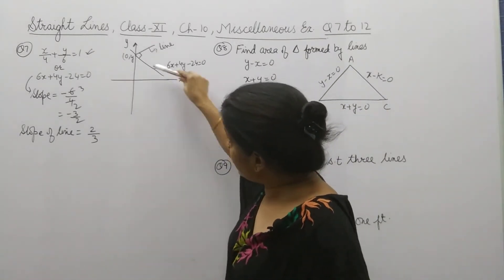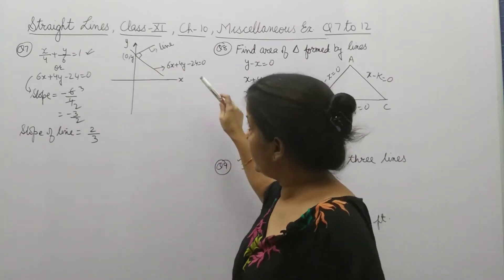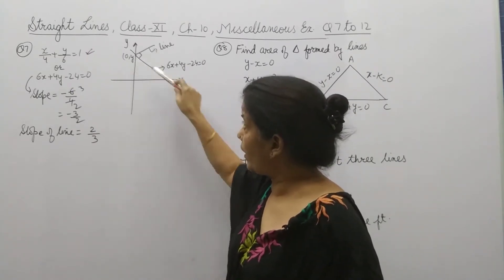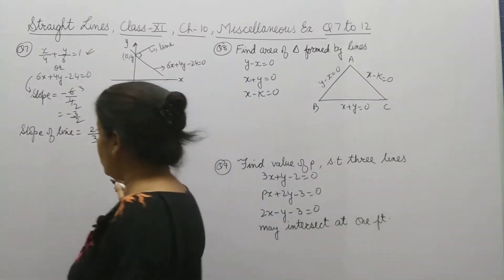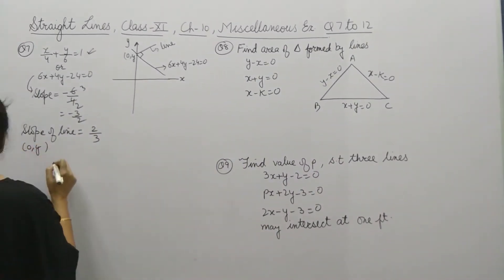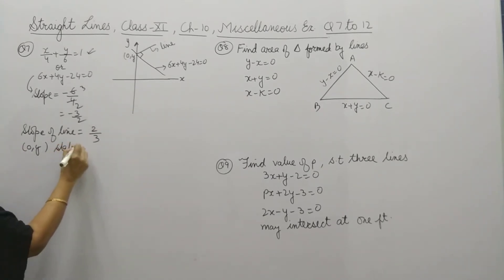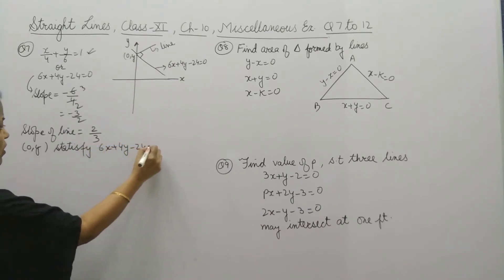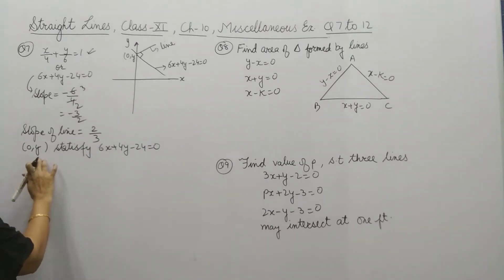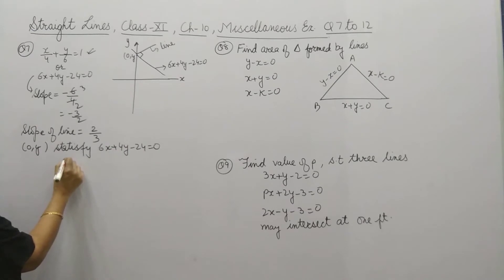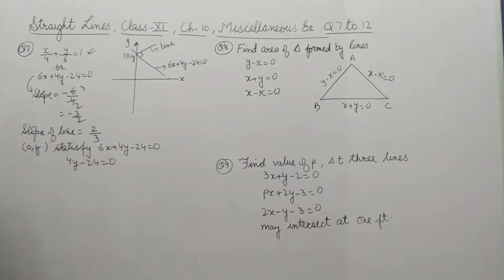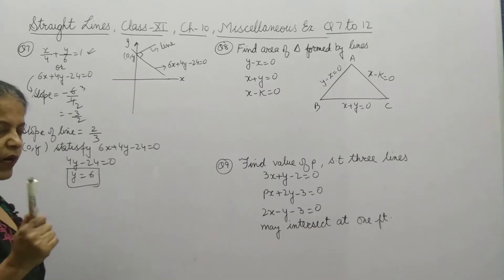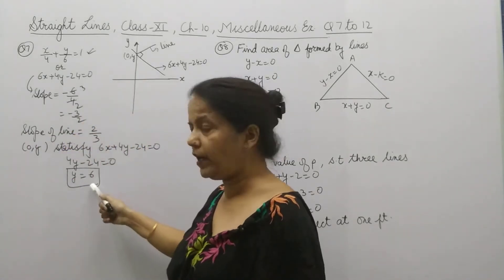The point (0, y) satisfies this equation also, since it is passing through this line. So (0, y) satisfies equation 6x + 4y - 24 = 0. We will put this value — x = 0 — into the equation, so it becomes 4y - 24 = 0, and we get y = 6.